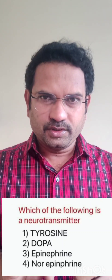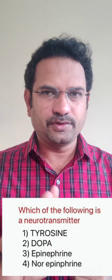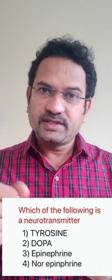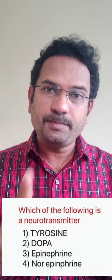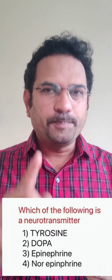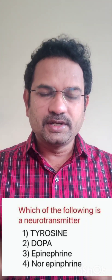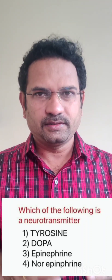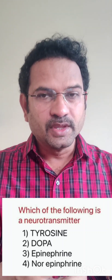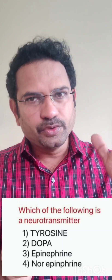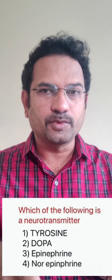So out of the four options, norepinephrine is the only neurotransmitter. Tyrosine is an amino acid — it is not a neurotransmitter. Dopa is also an amino acid — it is not a neurotransmitter. Norepinephrine is the neurotransmitter. Epinephrine is a hormone, not a neurotransmitter. Epinephrine is released from the adrenal gland, which sits on top of the kidney. Neurotransmitters are chemicals released from neurons, but epinephrine is released from a gland — it is a hormone. Don't get confused.